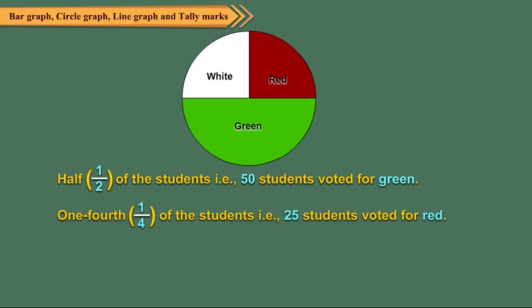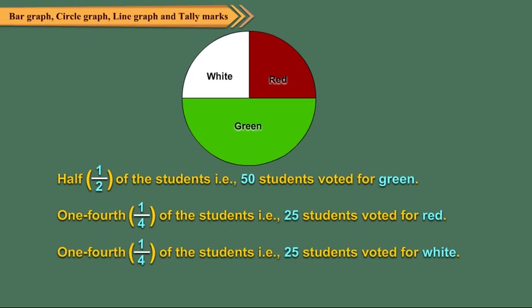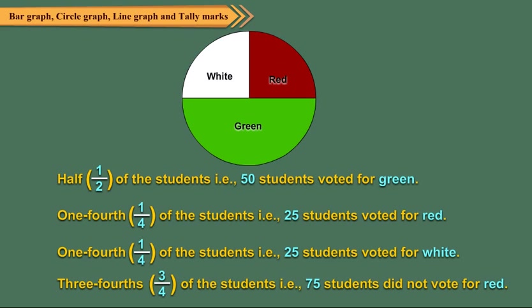One-fourth of the students, that is, 25 students, voted for red. One-fourth of the students, that is, 25 students, voted for white. Can you find how many did not vote for red? Clearly, three-fourths of the students, that is, 75 students, did not vote for red.